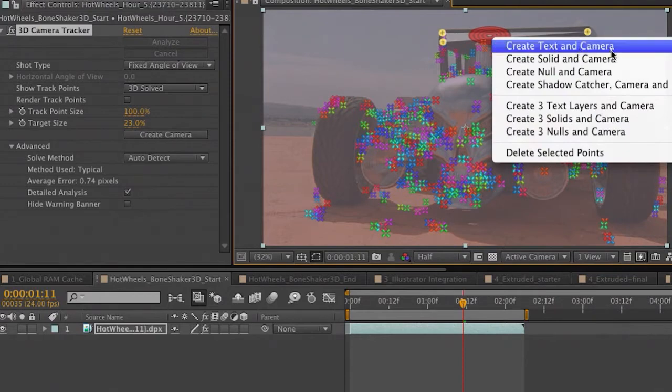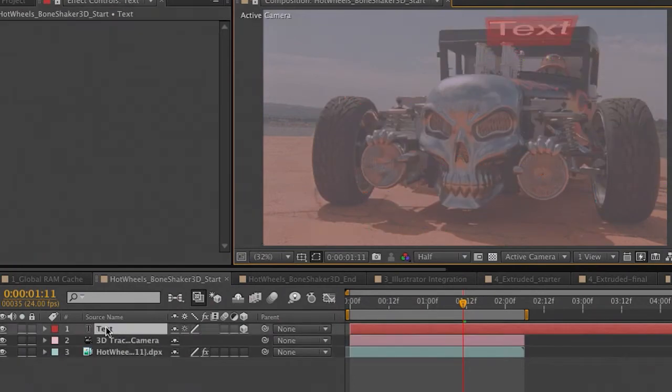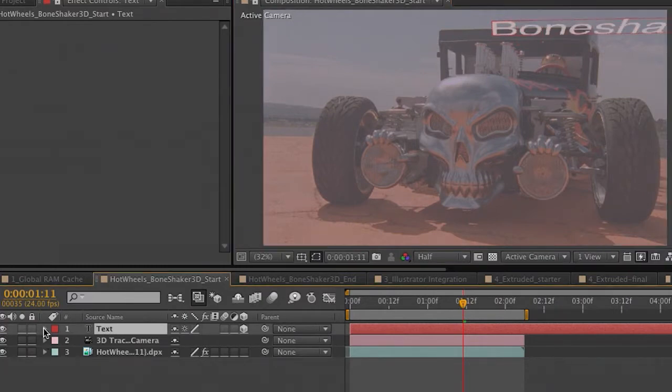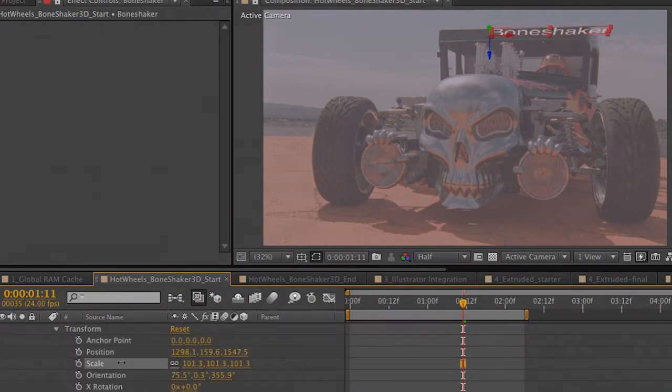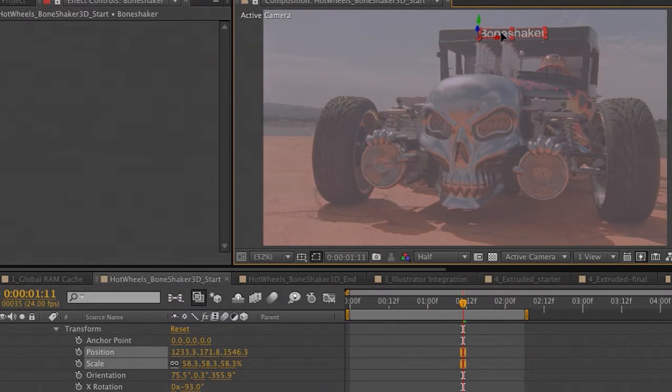So I can right-click on this now where I have the option to create text in camera, create solid in camera, null in camera. I'm going to choose text. Go ahead and select my text, modify the text. Let's go ahead and scale this down. We'll just slightly modify our X rotation like this, scale it down a little bit more.